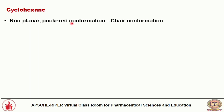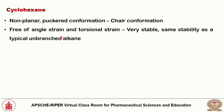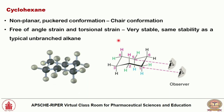Cyclohexane is a non-planar puckered conformation, and the most stable form is the chair conformation. It is free of both angle strain and torsional strain, making it as stable as a typical unbranched alkane such as hexane. These are the important cycloalkanes covered: cyclopropane, cyclobutane, cyclopentane, and cyclohexane — their structures, bond angles, angle strain, and torsional strain.